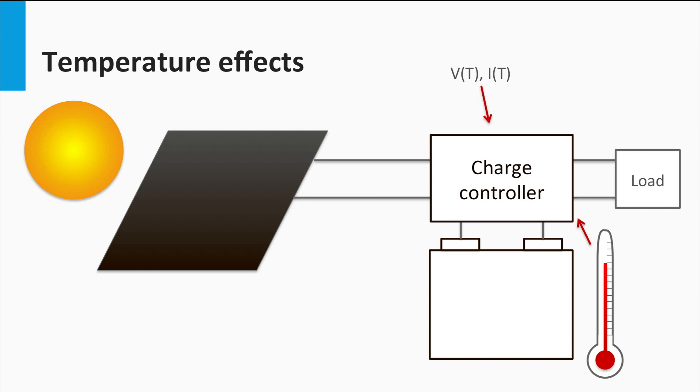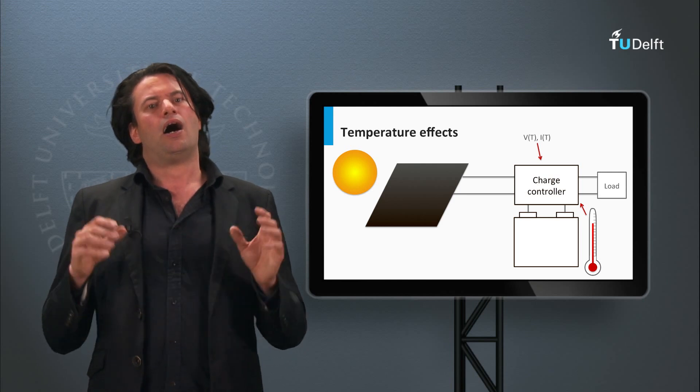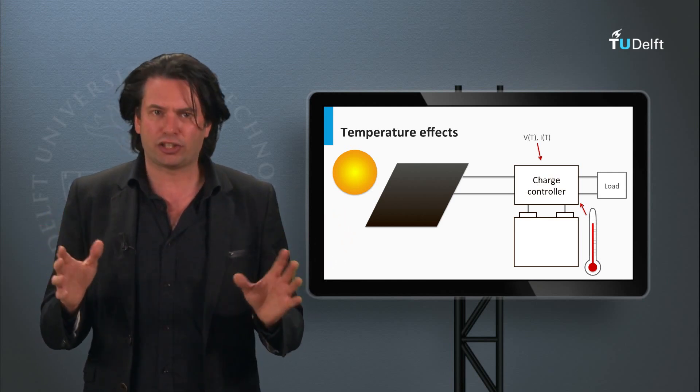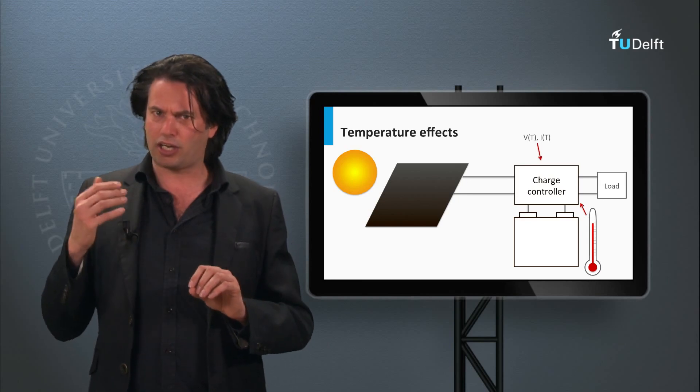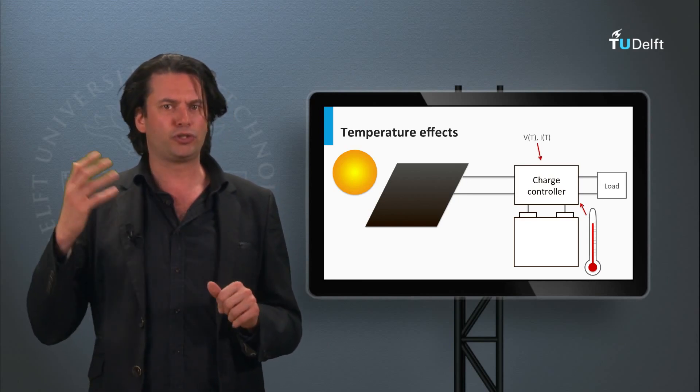For this reason, the charge controller is usually kept in close proximity to the battery, so that the battery's operating temperature is close to that of the charge controller. In extreme cases, if the battery is heavily loaded, sustained high currents might heat up the battery, and the charge controller would expect a different battery operating temperature than the actual value. However, high-end charge controllers are being designed to also take into account the temperature effects due to high currents.